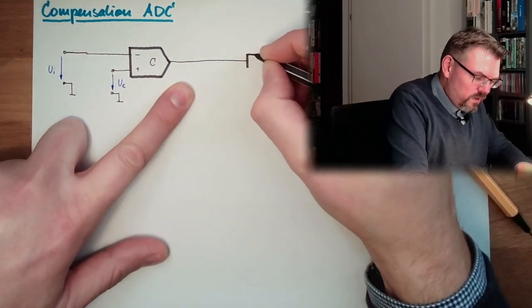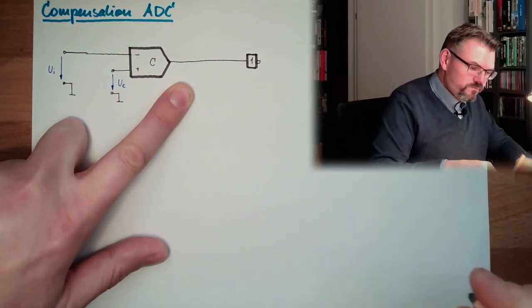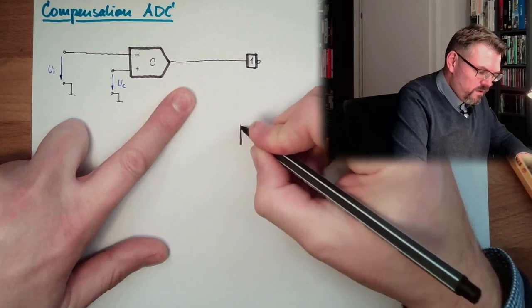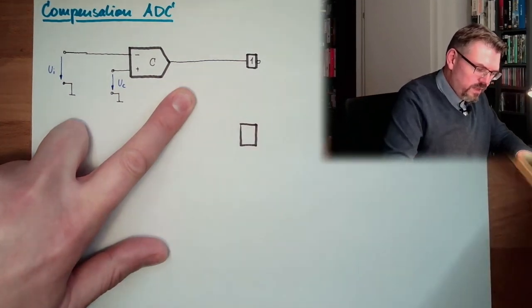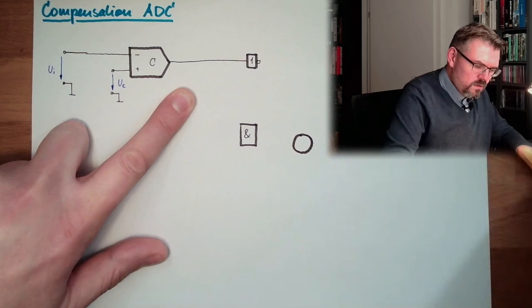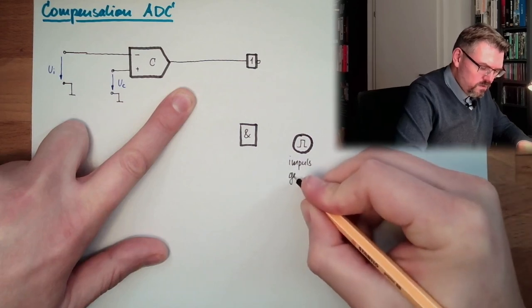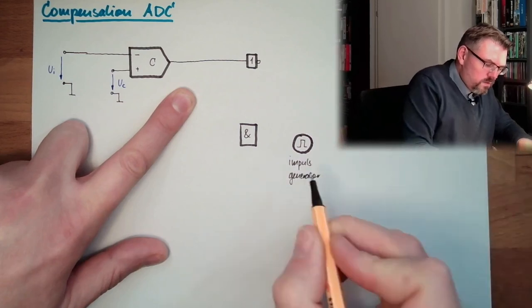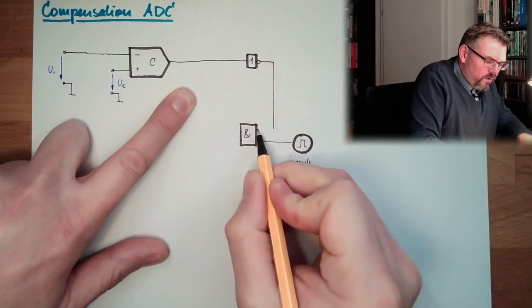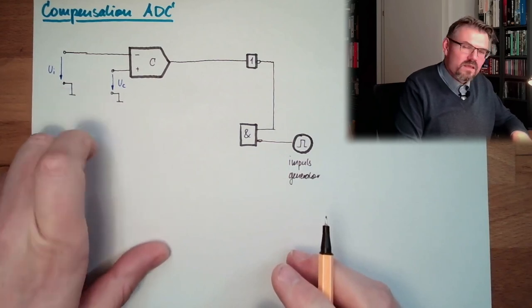The first thing I do, I don't want to know if it's higher. I want to know if it's lower. So I make a NOT here. Then I make it like that, that I have somewhere an AND. Somewhere I have an impulse generator. And at the output of the AND, I now have only impulses as long as the comparison voltage is lower than the input voltage.